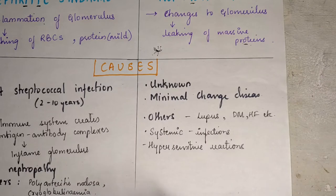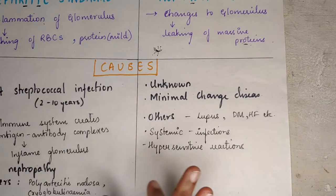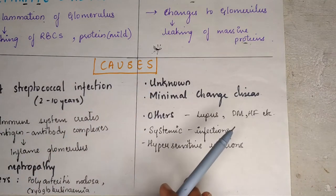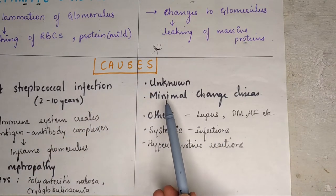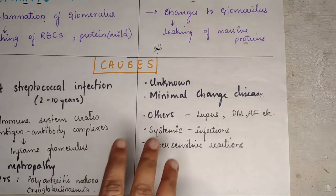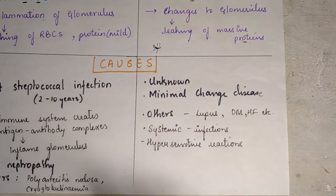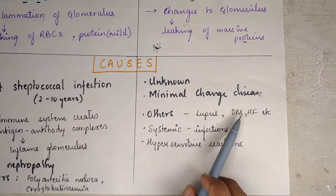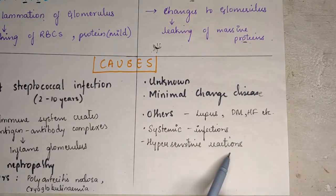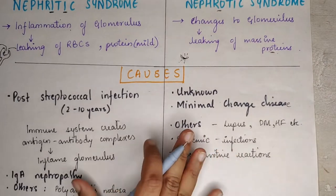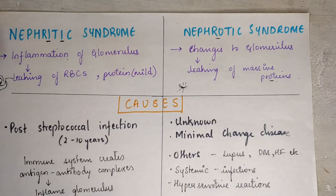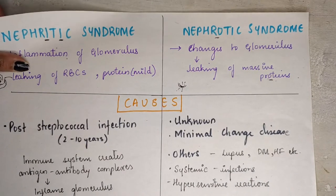When it comes to nephrotic syndrome causes, there are changes in the glomerulus, though the main cause is often idiopathic — unknown. We can also see minimal change disease, usually in pediatrics, and systemic diseases such as lupus, diabetes mellitus, heart failure, and hypersensitivity reactions.